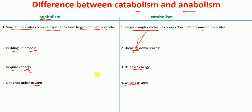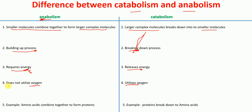An example of anabolism is amino acids combining together to form proteins, which are larger complex molecules. Whereas an example of catabolism is that the larger complex molecule proteins break down into amino acids.